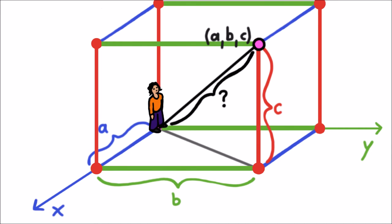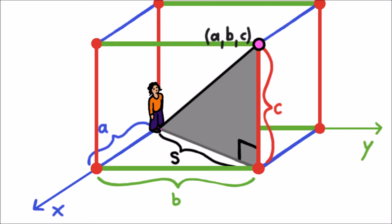Well, there's another right triangle hidden in this picture, and this one is standing up straight instead of lying down flat. One side is the shadow, call its length S. Another is a vertical edge of the box, with length C. The angle between these two edges is a right angle, and the hypotenuse is our original rope.